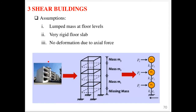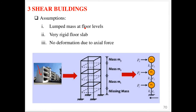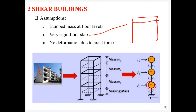So now we know what shear buildings are. What are the assumptions? First, we assume the mass is lumped at the floor levels — the mass of the floor is assumed concentrated at the floor slab level. Second, we assume a very rigid floor slab, meaning it cannot bend at the junction. Only the columns themselves are flexible enough to allow movement.